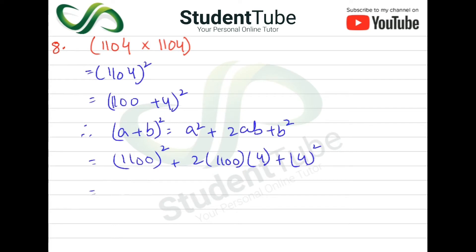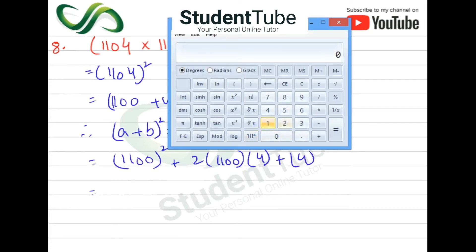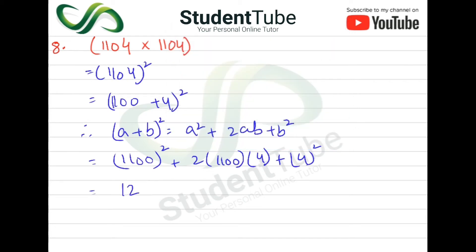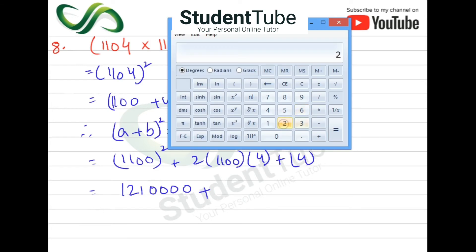4 square is 1, 4, 0, okay, then plus. Then 2 multiplied by 1100, then multiplied by 4. 2 multiply by 1100.